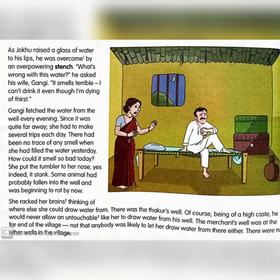There was the Thakur's well. Of course, being of high caste, he would never allow an untouchable like her to draw water from his well. The merchant's wife was at the far end of the village, and nobody was likely to let her draw water from there either. There were no other wells in the village.